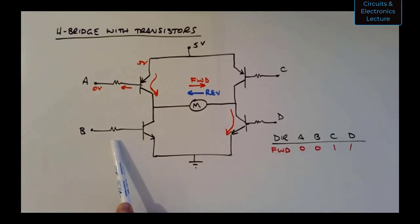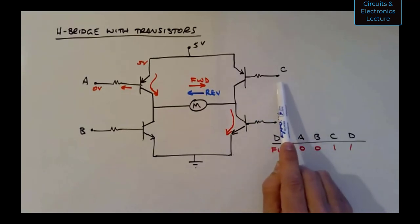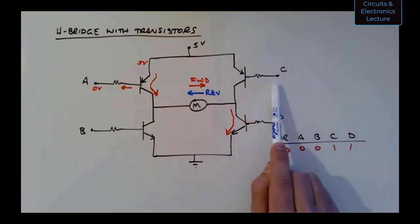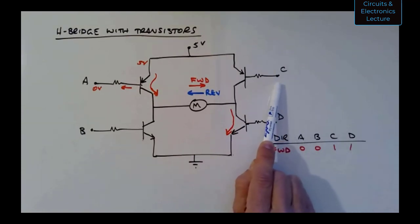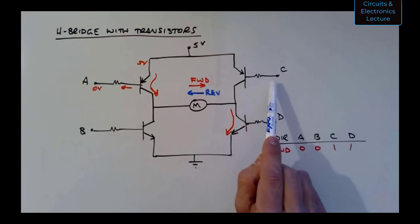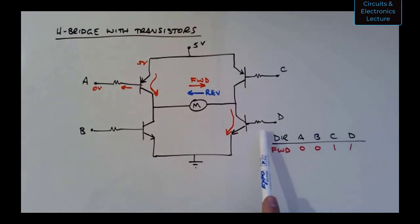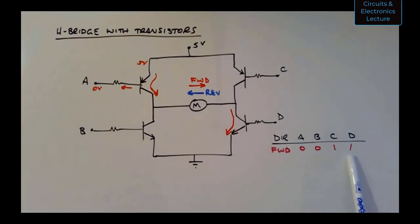We want transistor B in cutoff — it's an NPN transistor, so we apply zero volts to B as well. For transistor C, we want it in cutoff, so we apply five volts to C — a logic level one — making the voltage on both sides of the base-emitter junction equal, so zero current flows through the base. For transistor D, we apply five volts — logic level one — to saturate it. This causes current to flow from left to right through the motor, and the motor turns in the forward direction.